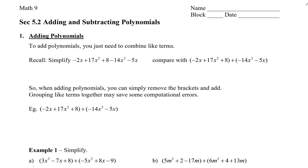So recall how to simplify by combining like terms. In this example here, we can see that we have a positive 17x squared and a negative 14x squared. These are like because they have the same variable raised to the same exponent. The coefficients are different, and that's what we're going to add or subtract. So we have 17 minus 14x squared, and that will give us 3x squared.